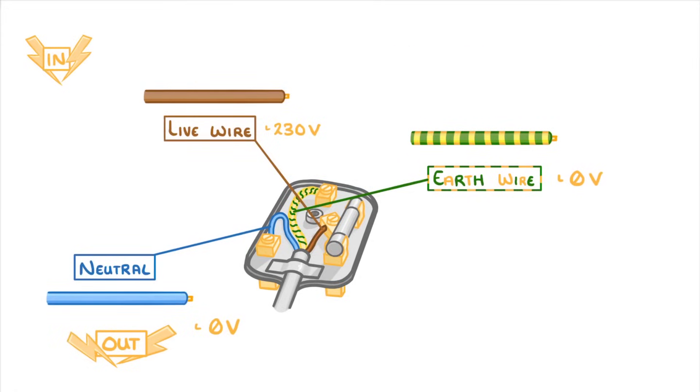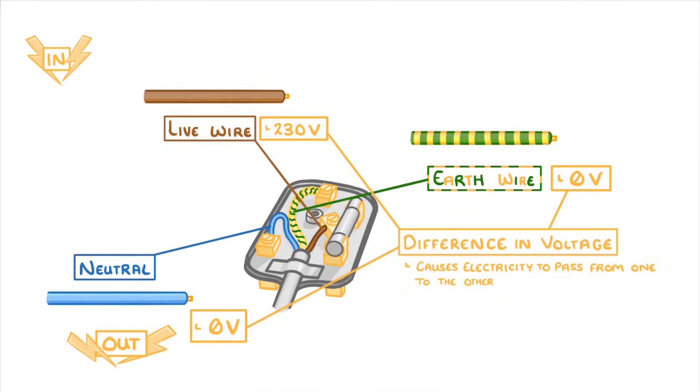Now the reason that the electricity from the live wire is happy to pass through the neutral wire or occasionally the earth wire is that they both have potential differences of zero volts while the live wire is at 230 volts. And it's this difference in voltage that causes electricity to pass from one to the other.